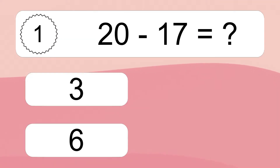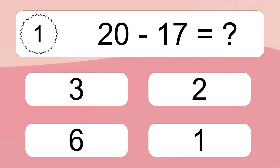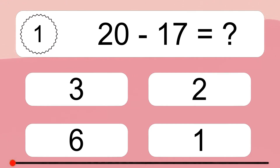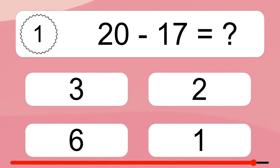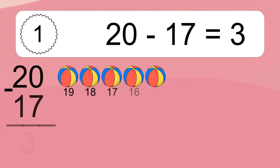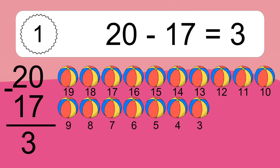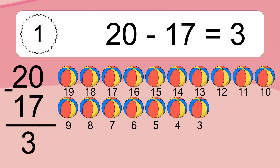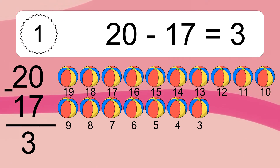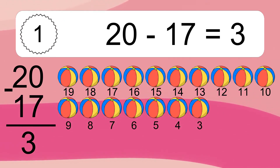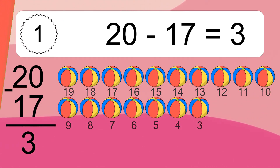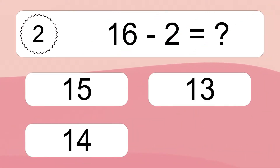20 minus 17 equals what? 20 minus 17 equals 3. Let's count it: 19, 18, 17, 16, 15, 14, 13, 12, 11, 10, 9, 8, 7, 6, 5, 4, 3. 16 minus 2 equals what?